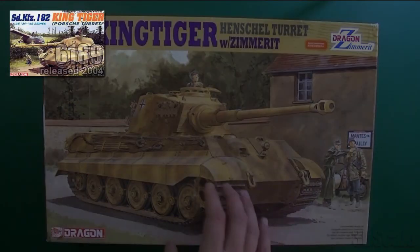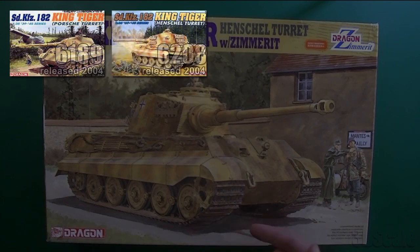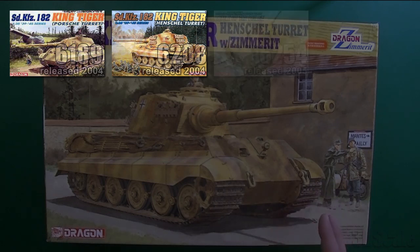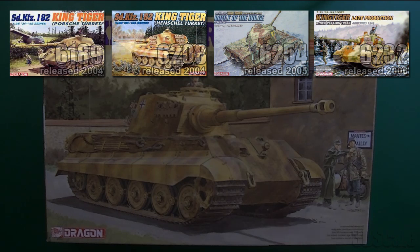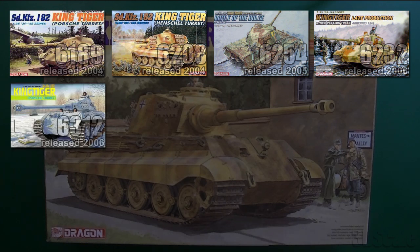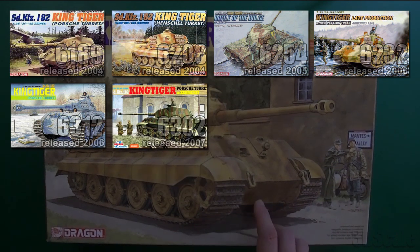The rundown of the KTs: in '04 there was 6189, which was a Porsche, and then right after that 6208, the Henschel. Those were the first two proper KTs from Dragon. Then in '05 they started this Battle of the Bulge thing with 6254. Then in '06, 6232 was the new pattern track late bulge one. Then there was a premium Porsche 6312, and in '07 we started with 6302 the Porsche Zim, and 6303, this one, the Henschel Zim.